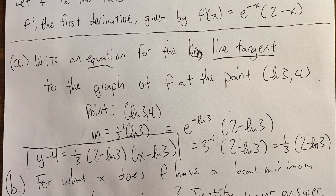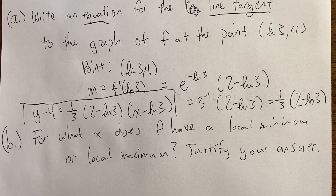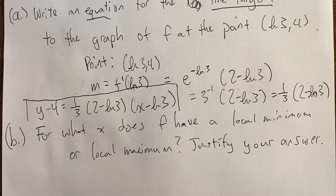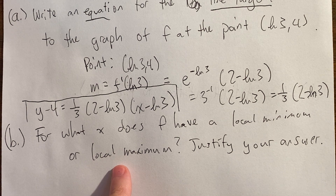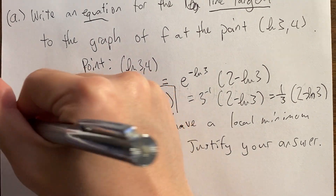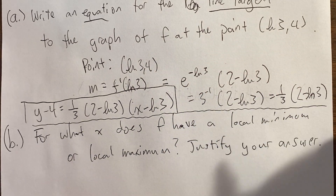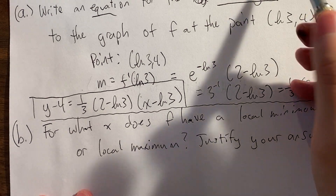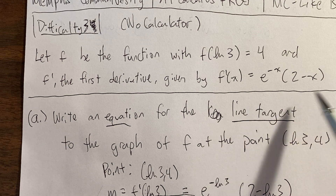Part B is a shapes of curves question: for what x does f have a local min or local max? The four shapes of curve topics are increasing/decreasing, concave up or down, local min or max, and inflection points. To answer this, we need to draw the sign chart of f'(x) = e^(−x)(2 − x). Since we have no calculator, we rely on algebra.